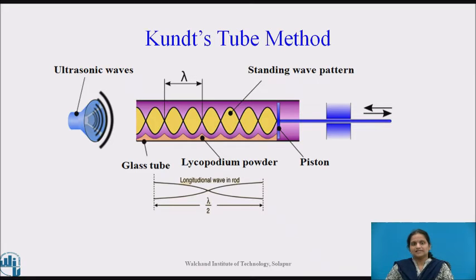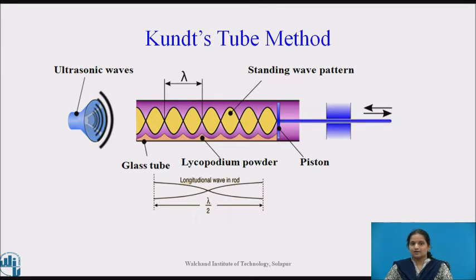The next method is the Kundt's tube method. A Kundt's tube can be used to detect ultrasonic waves of relatively longer wavelengths. Stationary ultrasonic waves are produced in air contained in a long tube supported horizontally. The lycopodium powder sprinkled along the inner surface of the tube collects into small heaps at the nodes and is blown off at the antinodes, as shown in the figure. The appearance of heaps indicates the presence of waves, and the mean distance between two successive heaps is equal to λ/2.